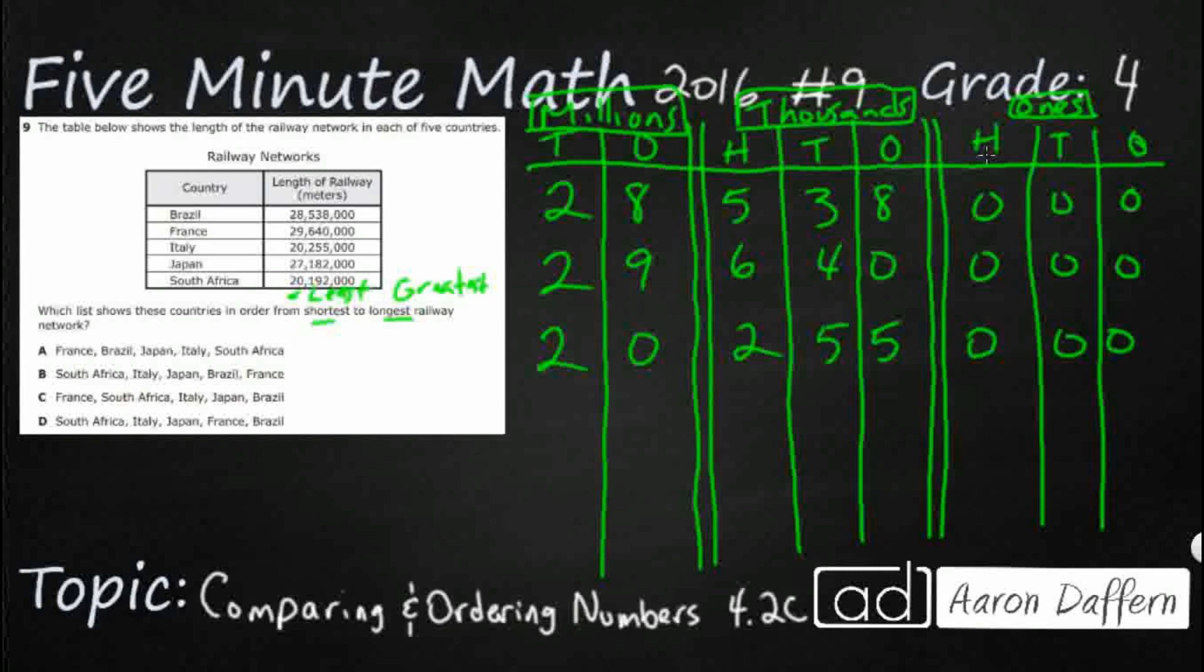We've got two more. We've got our Japan, so that's 27 million, 182 thousand. 182 thousand for Japan, 192 thousand for South Africa. Let's put some letters there: Brazil, we've got France, Italy, Japan, and South Africa.